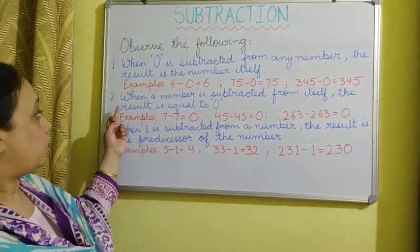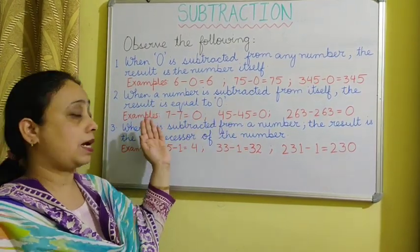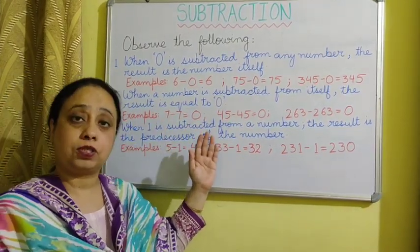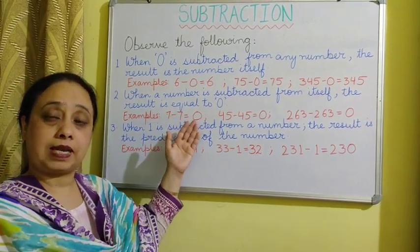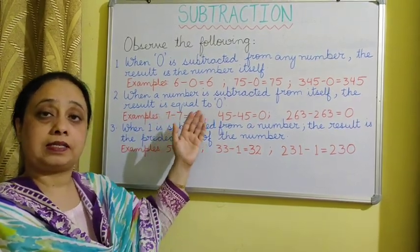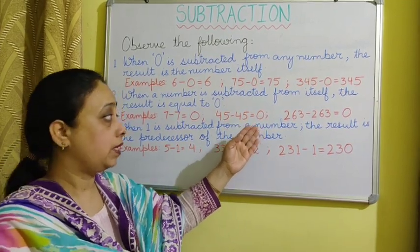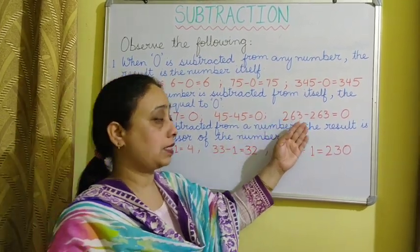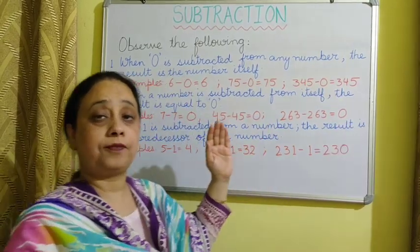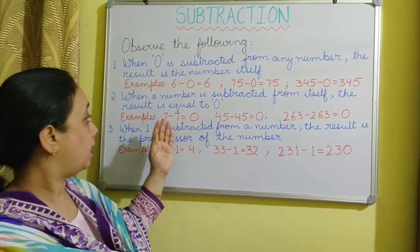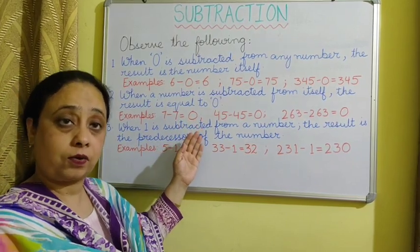The second point: when a number is subtracted from itself, the result is equal to 0. If we subtract 7 from 7, that is 7 minus 7 equals 0. 45 minus 45 is 0. 263 minus 263 is 0. So if we subtract a number from itself, the answer is always 0.